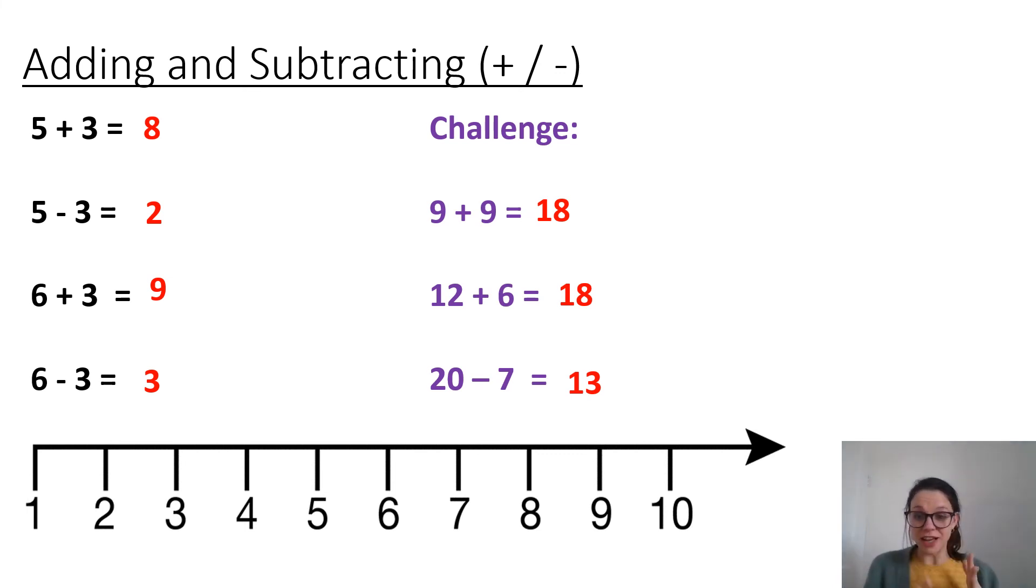Again, our doubles can help us with nine add nine. We've had that question today already. And well done if you remember that nine add nine is 18. Twelve add six is 18 as well. And the way I would think about that is because twelve's got the two and then we've got the six. Six add two is eight. So twelve add two is 18.